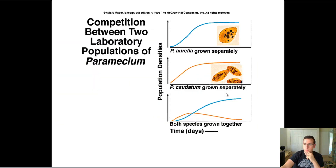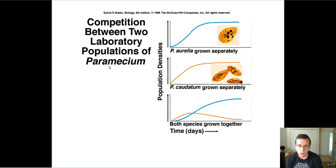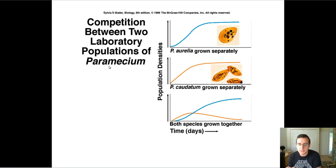Here's an example of an experiment that also shows that. This shows two types of paramecium produced in a laboratory. If you grow Aurelia by itself, it will do fine. If you grow caudatum by itself, it will also do fine — both can live in the vial given to them. But if you put them both together, the Aurelia will outcompete the caudatum, because they're fighting for the same niche and only one of them can survive.